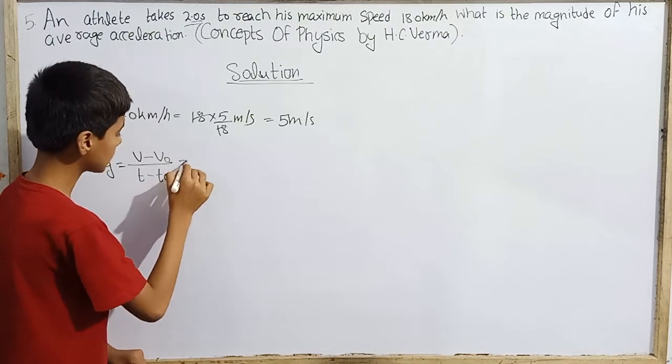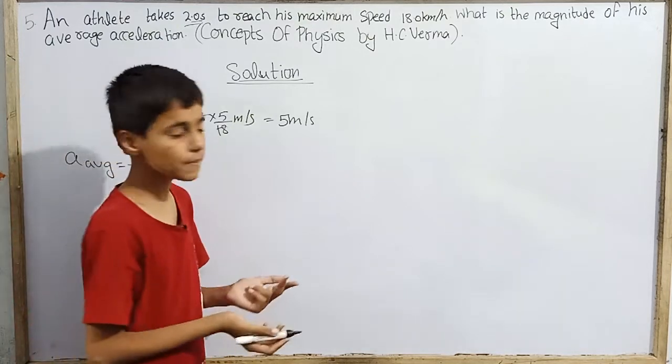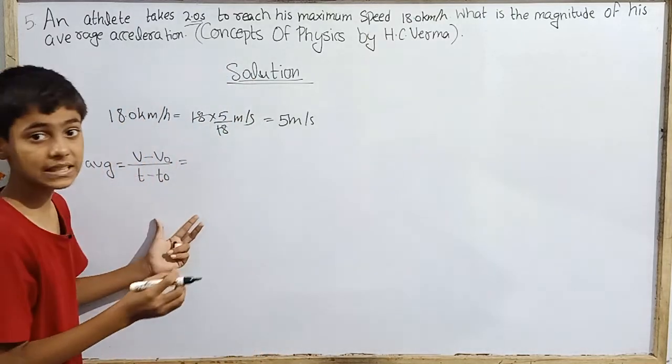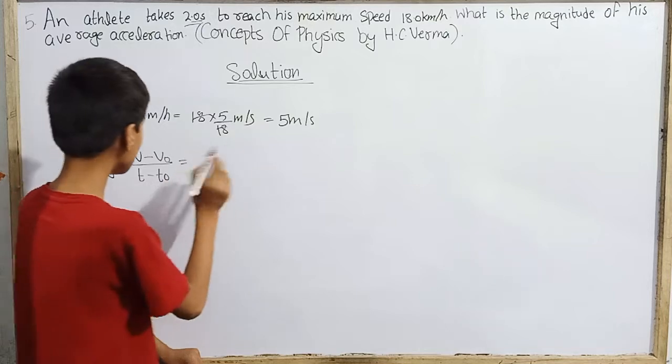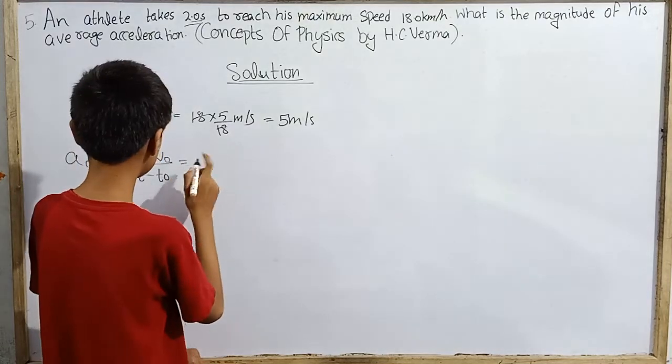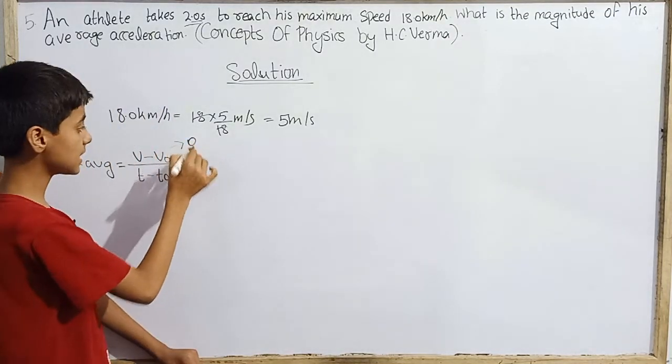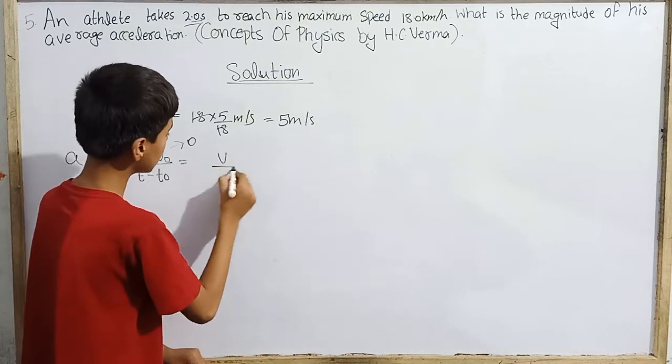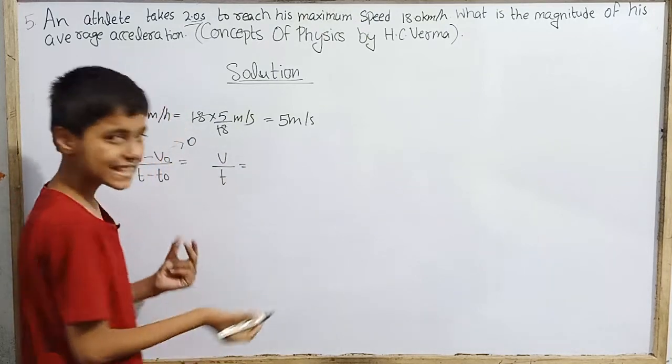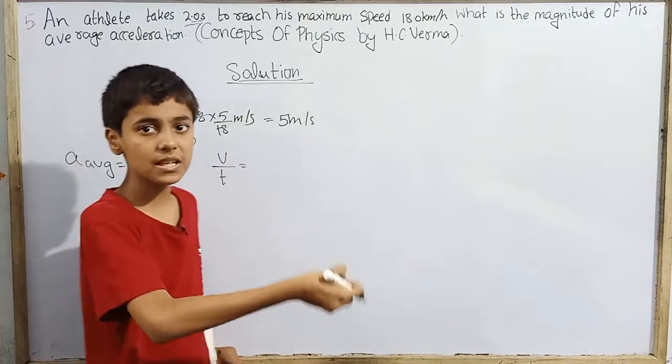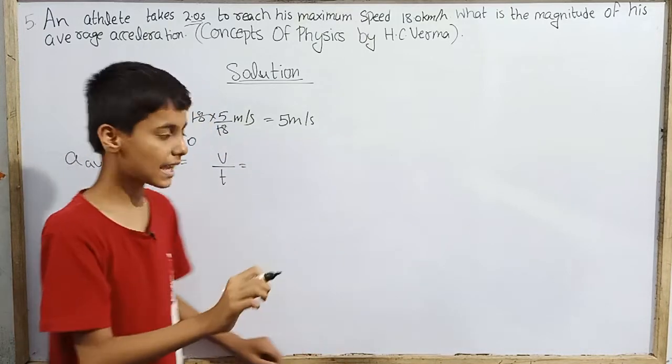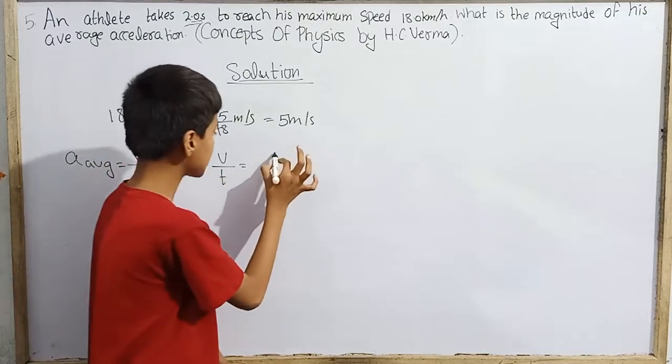If the athlete was at rest, which basically happens in the race, the athlete is at rest, so rest means initial speed is 0. V over T, final speed. What is the maximum speed? Because the athlete reaches the maximum speed.